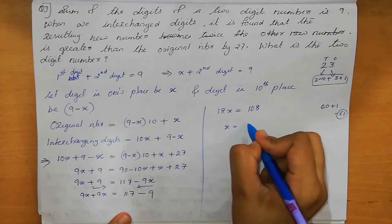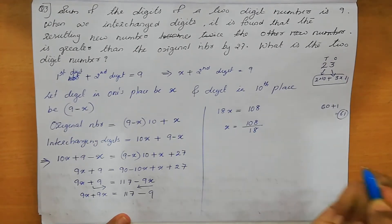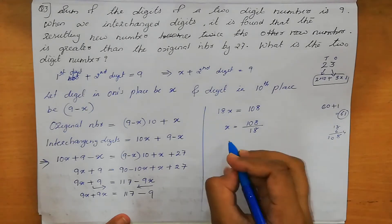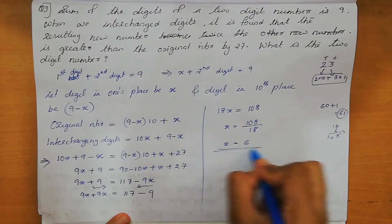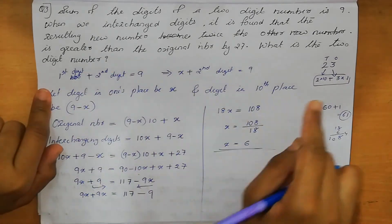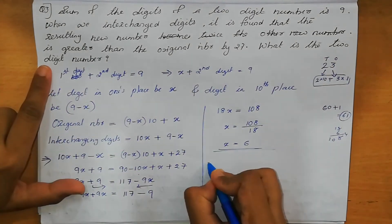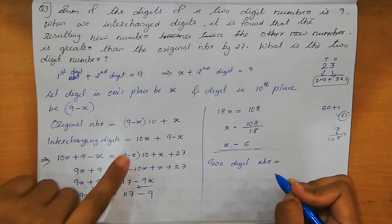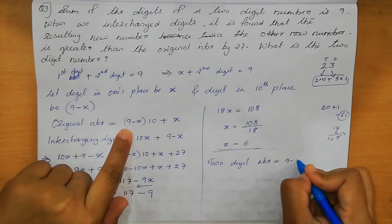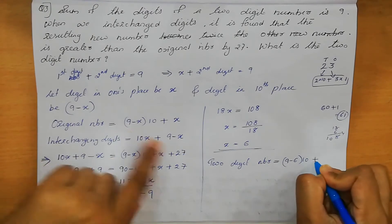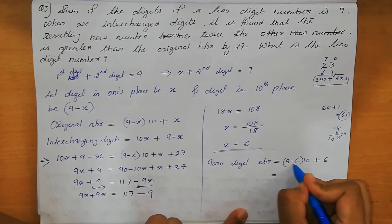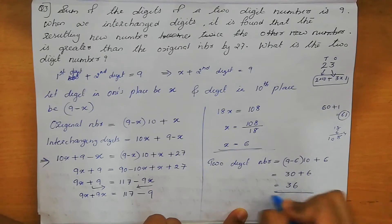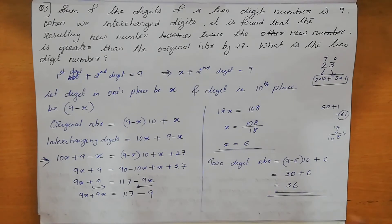X equal to 108 divided by 18. 18 sixes are 108. So X equal to 6. This is not our final answer — we need to find the 2-digit number. Original number equals 9 minus X into 10 plus X: 9 minus 6 is 3, 3 into 10 is 30, plus 6 equals 36. The 2-digit number is 36.